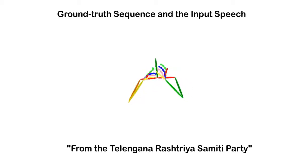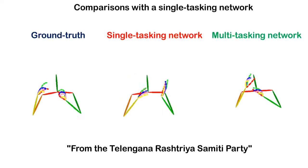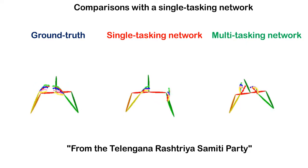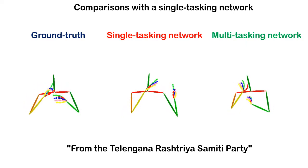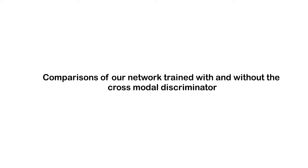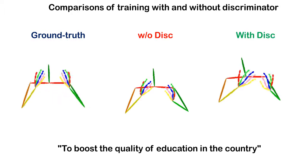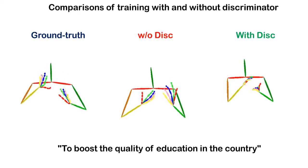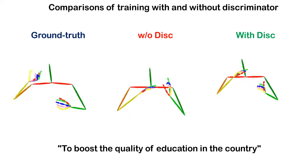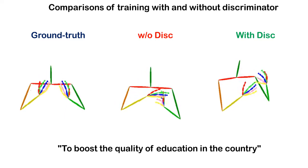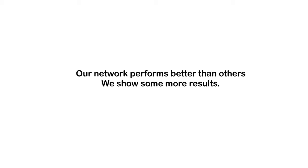Next, we also compare results generated from our multitasking network with predictions from a single-tasking network that did not have the auxiliary task of transcribing the speech, using the phrase 'From the Tilangana Rashtra Samhiti Party.' We also check the effect of the cross-modal discriminator in our architecture. As we can see, our network performs better than other comparative settings.